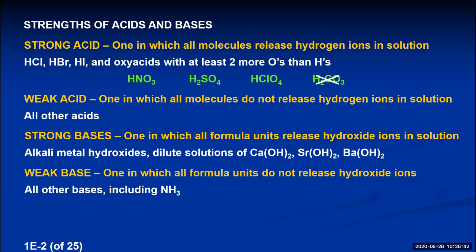Weak bases include all other metallic hydroxide bases and all other covalently bonded base substances. The one weak base you should know by memory is ammonia. Ammonia is considered a weak base because it does not produce a lot of hydroxide ions in solution.